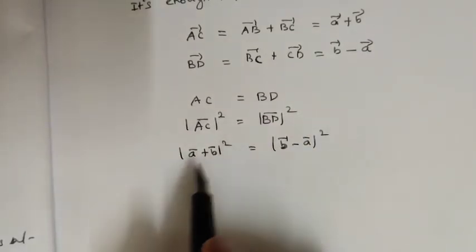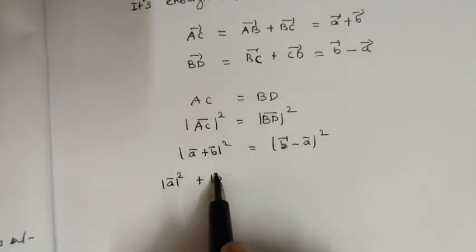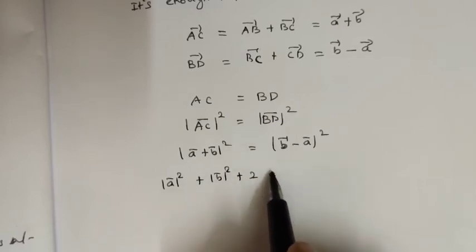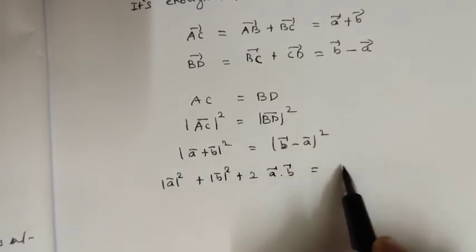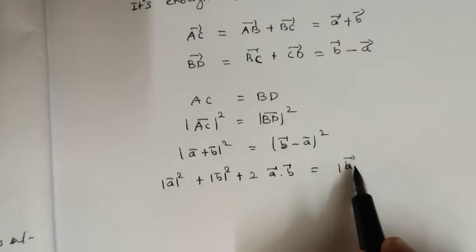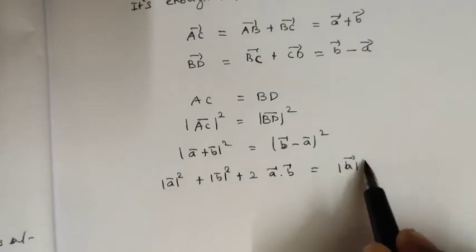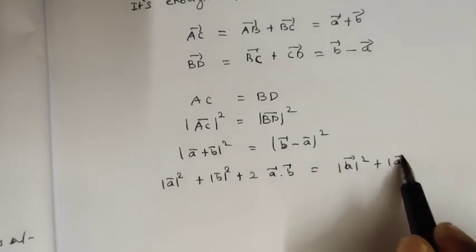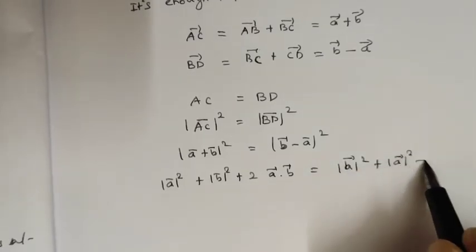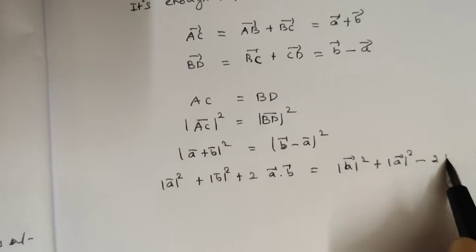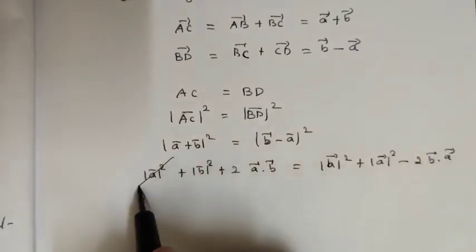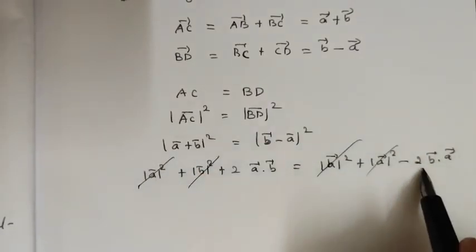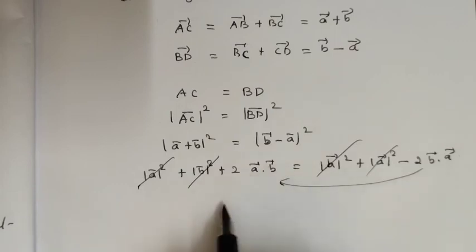This is b vector minus a vector. A plus b whole square: magnitude of a squared plus magnitude of b squared plus 2 into a vector dot b vector. Magnitude of b squared plus magnitude of a vector squared minus 2 into b vector dot a vector. a squared cancels, b squared cancels. This minus becomes plus side.